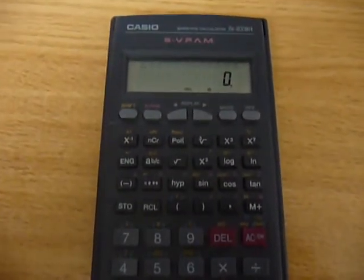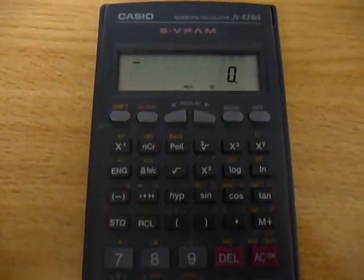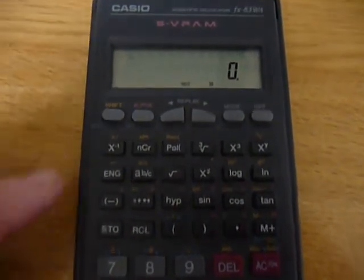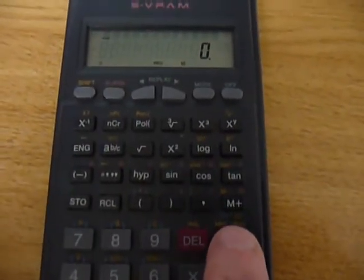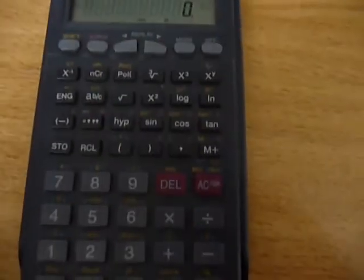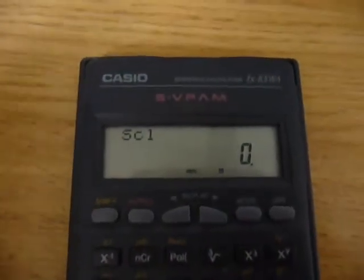Now the first thing we want to do is make sure that the memory is clear, so that any previous data that has been entered is eliminated from the calculator. And to do that we press the shift key, followed by the on button. That clears the memory. You see it comes up with SCL. If you just press equals, that ensures that the memory is now clear.